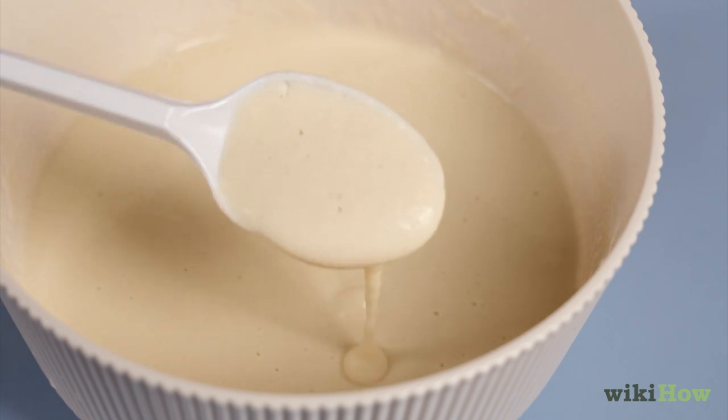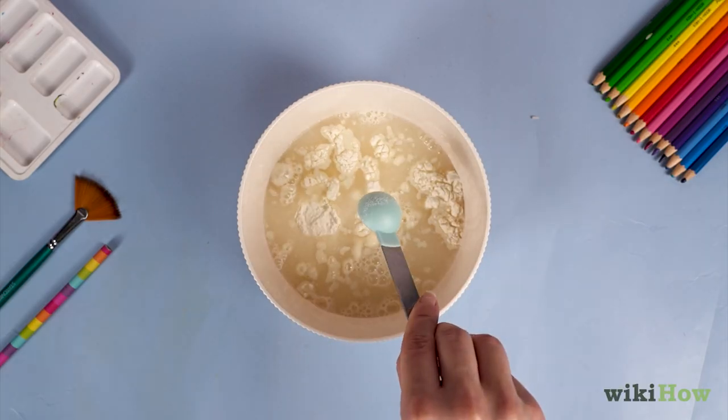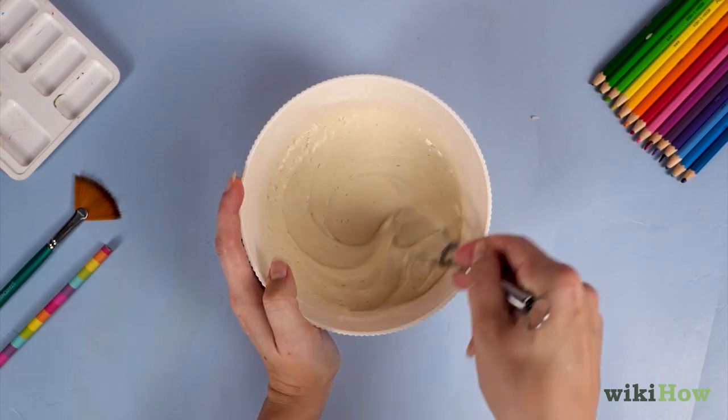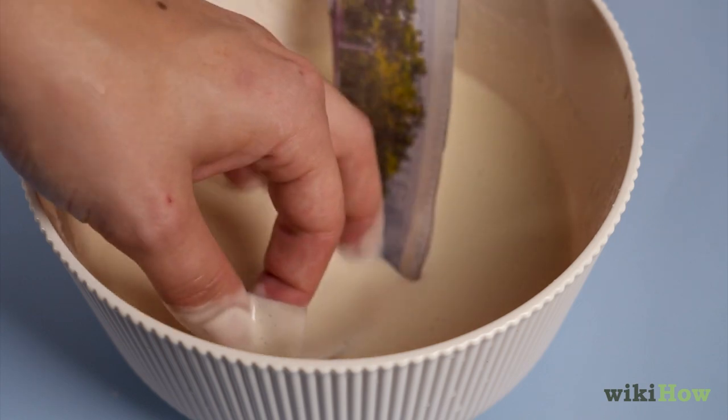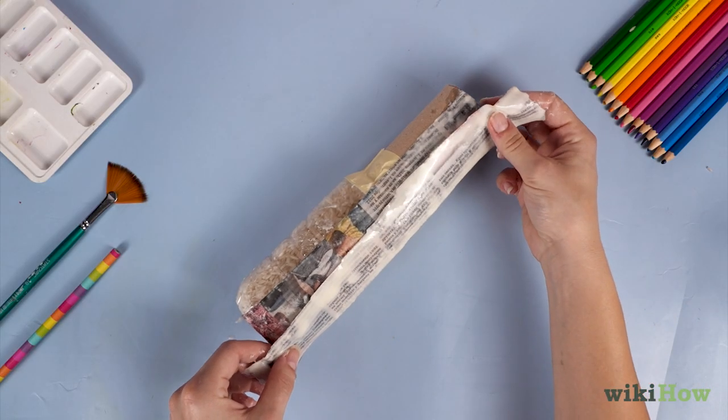Finally, you can make papier-mâché maracas by combining flour, water, and salt to make a paste. Dip strips of newspaper into the paste and cover the plastic bottle, tube, and masking tape.